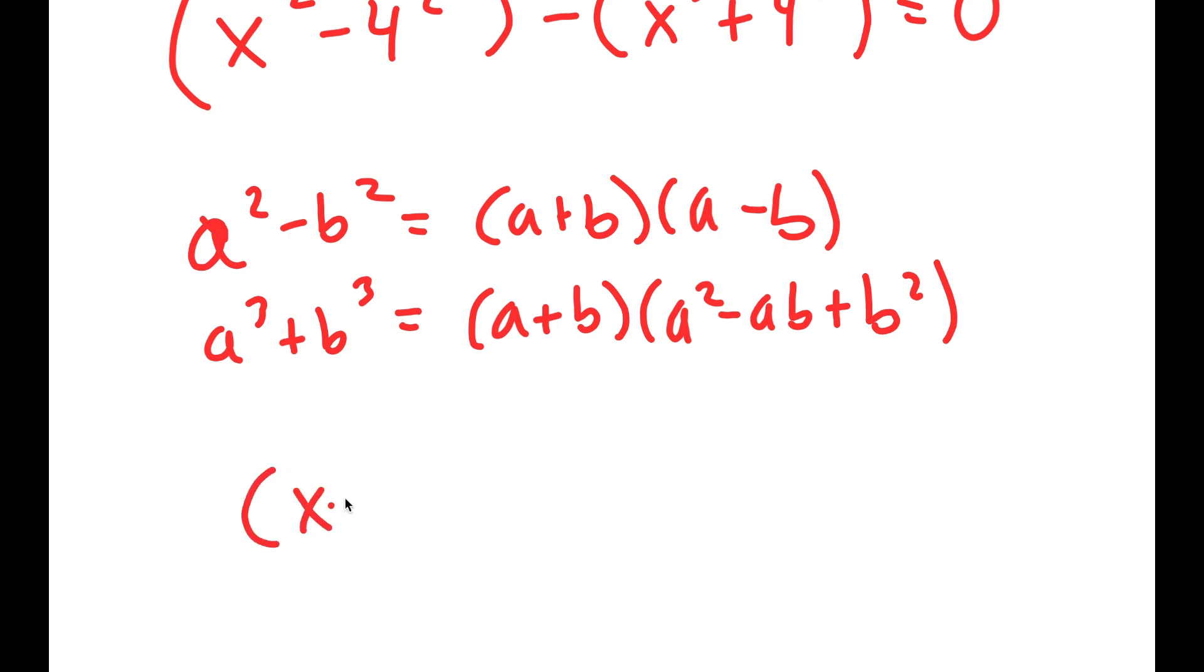So I get (x+4)(-x² + 5x - 20) = 0 after simplifying all of this and using both of these properties.